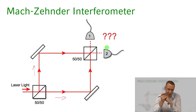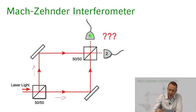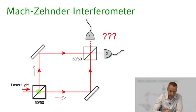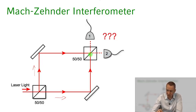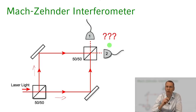A naive guess might be that you're just going to see half of the light coming out here and half coming out here, because we're dividing the light into half the intensity in each direction, then splitting it again and adding them up — so 50 percent on each detector.